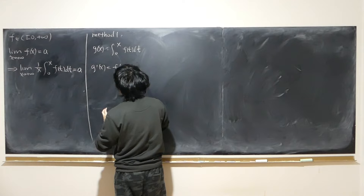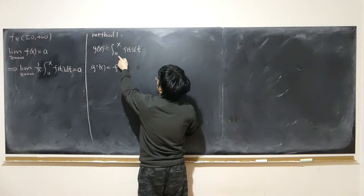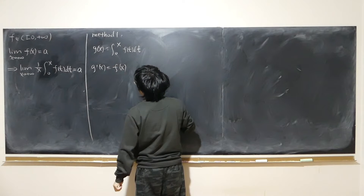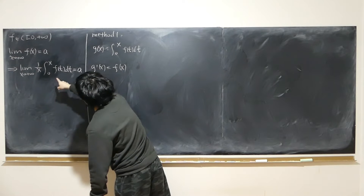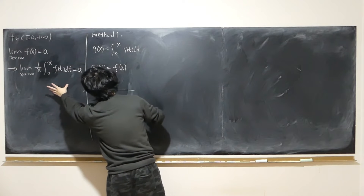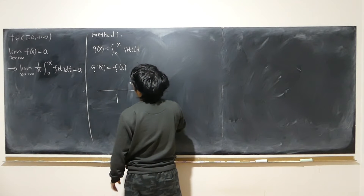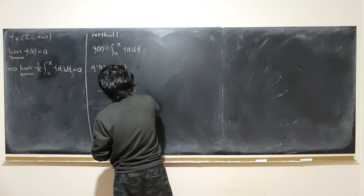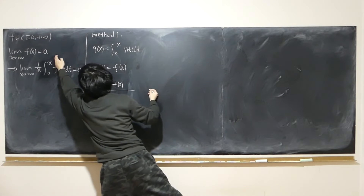At every point, for any value x from 0 all the way up to positive infinity, it always differentiates to f(x). So we can apply L'Hôpital's rule. The limit equals — we differentiate the top and bottom. On the bottom we have x, so x differentiates to just 1. Differentiating the top gives f(x). Then letting x approach infinity, it turns out to be just a.